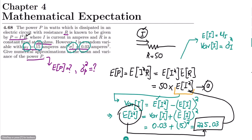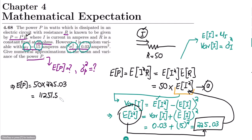Now taking this and putting it into equation A, the expected value of P = 50 × E[I²] = 50 × 225.03 = 11,251.5 watts. This is the expected value of P, and since it is in watts it remains in watts. This is the solution for part A.